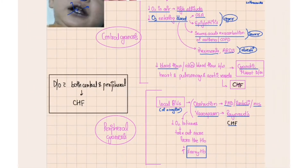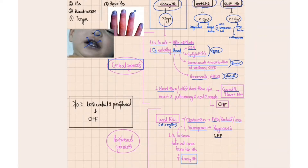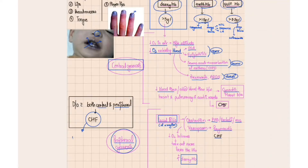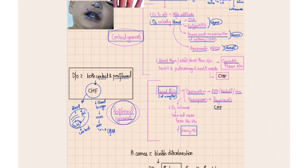When cyanosis occurs due to central causes like the airway or heart, it is called central cyanosis. When it occurs due to peripheral causes like local blood vessel involvement, it is called peripheral cyanosis. In congestive heart failure, there is both central and peripheral cyanosis: abnormal blood flow reduces oxygenation at the pulmonary capillaries and causes pulmonary edema (central), while decreased blood to organs triggers sympathetic stimulation and vasospasm in peripheral vessels (peripheral).